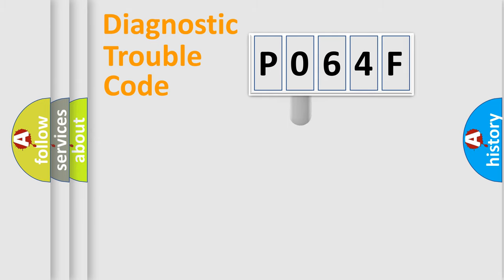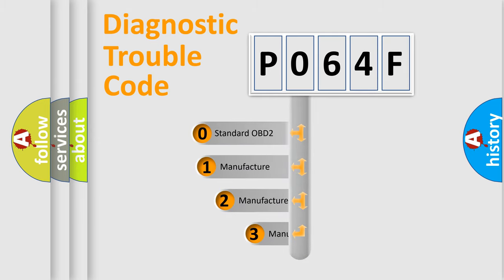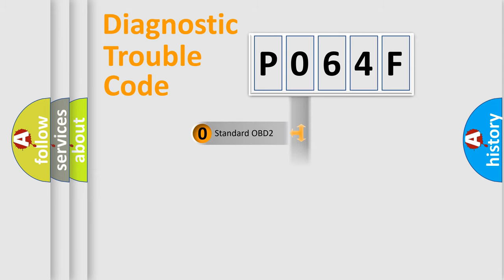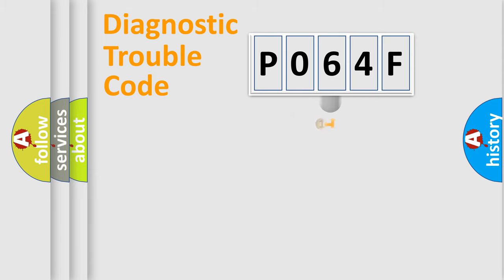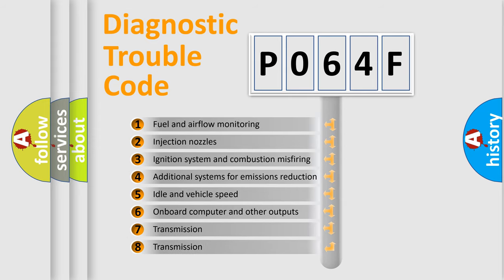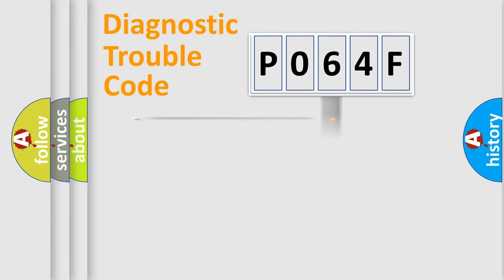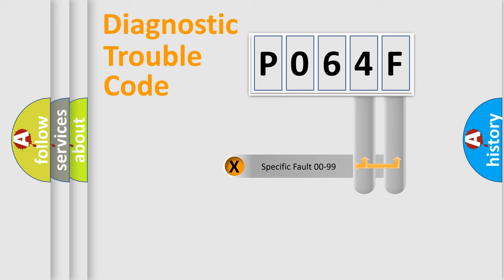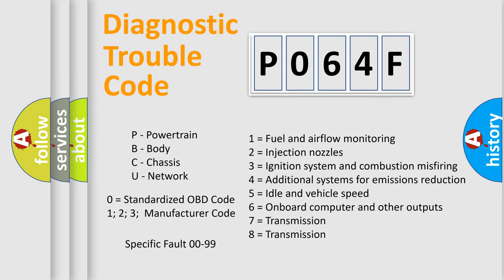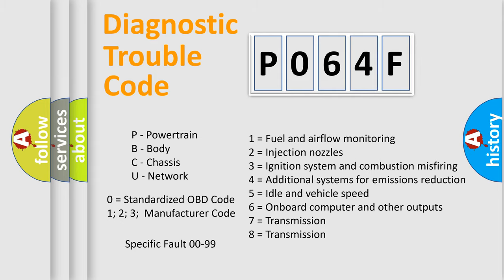This distribution is defined in the first character of the code. If the second character is expressed as zero, it is a standardized error. In the case of numbers 1, 2, or 3, it is a manufacturer-specific error. The third character specifies a subset of errors. The distribution shown is valid only for the standardized DTC code, and only the last two characters define the specific fault of the group.